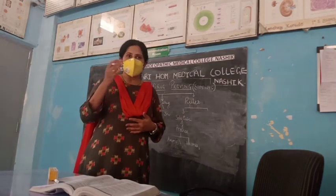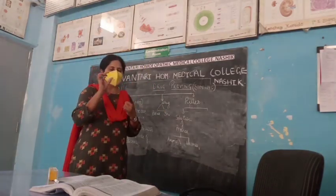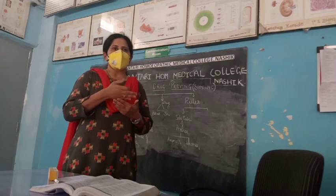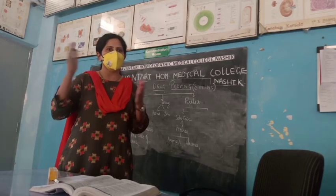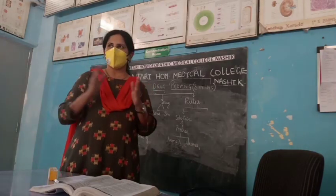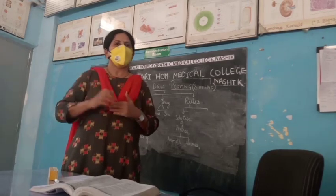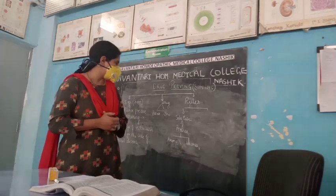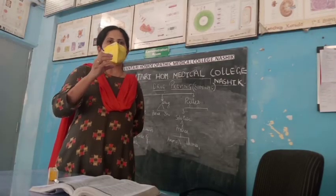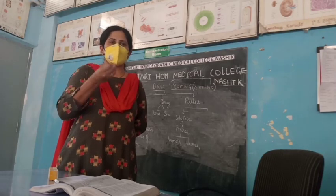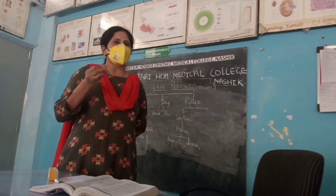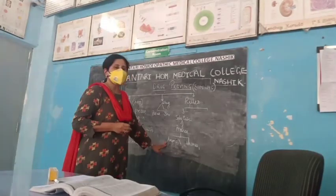There are certain advantages of using animals: first, a large quantity of drug can be given for proving because if the animal dies it is not a problem, whereas it is not possible to give a large quantity to a human prover. Second, the drug can be given for a longer duration. Third, the pathological aspect of the drug can be studied — if the animal dies it is acceptable, but we cannot afford to lose the prover.